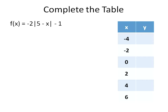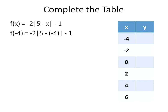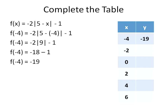Now we've got a more complicated function, and I'm given a table of values. I'm going to plug in these values — negative 4, negative 2, 0, positive 2, 4, and 6 — into this equation everywhere I see x. Starting with f(-4): 5 minus negative 4 is the same as 5 plus 4, so I have 9. The absolute value of 9 is positive 9. Negative 2 times positive 9 gives me negative 18, minus 1 is negative 19. I'll plug that into my table as the y value.